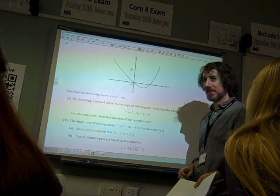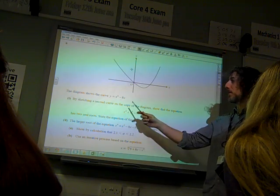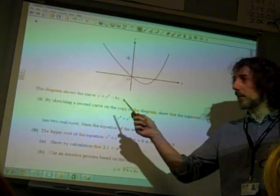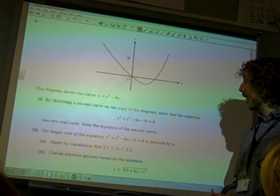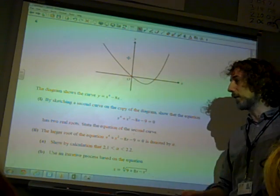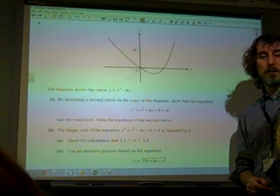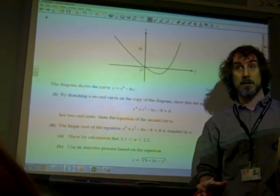Okay, so question six. I just said that I think the toughest two marks on the paper. You were given this diagram, and you had this on your answer booklet, and you were asked to sketch a second curve on the copy of the diagram to show that the equation there has two real roots. So actually there's quite a lot going on here.